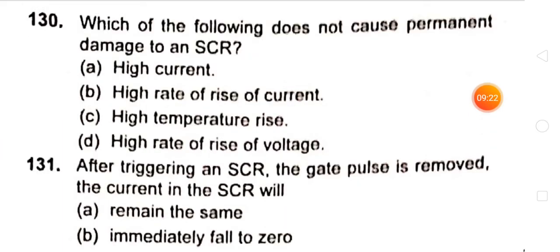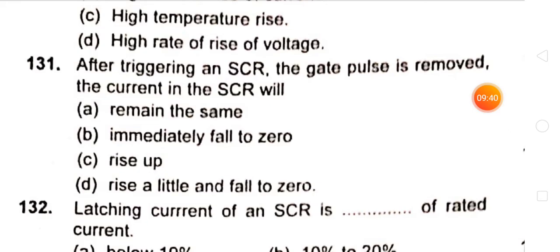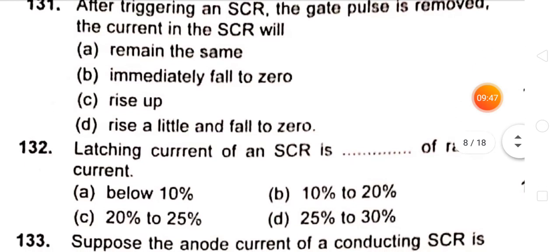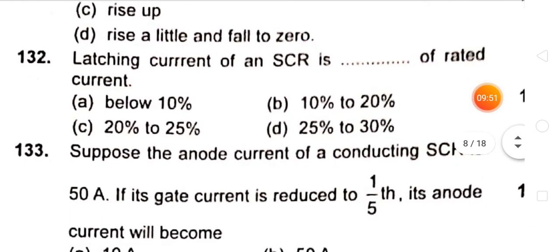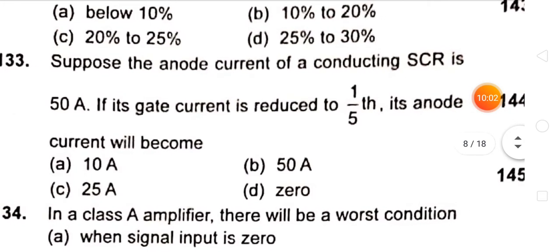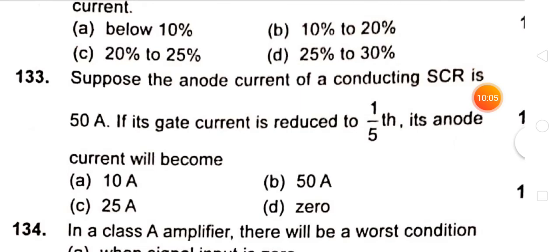Which of the following does not cause permanent damage to an SCR? High current will not cause permanent damage. After triggering an SCR, if the gate pulse is removed, the current in SCR will remain the same. Latching current of an SCR is below 10% of rated current. Suppose the anode current of a conducting SCR is 50 amperes. If its gate current is reduced to one-fifth, its anode current will be 50 amperes.